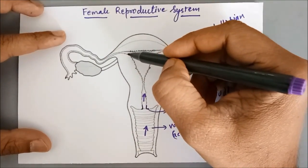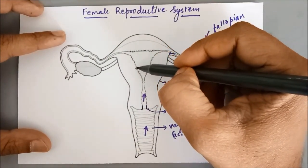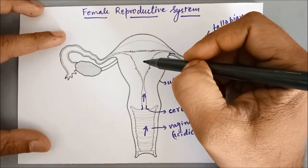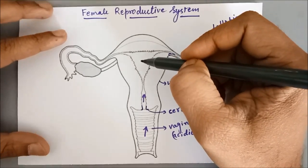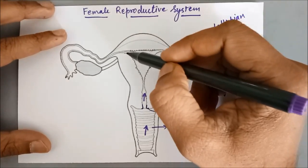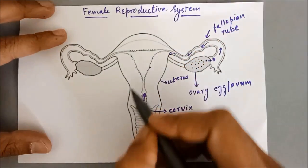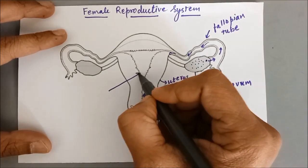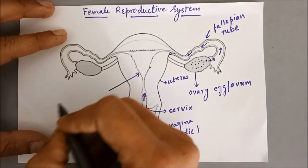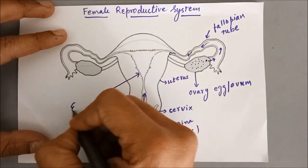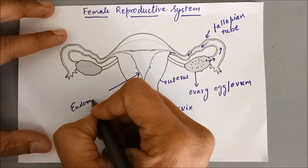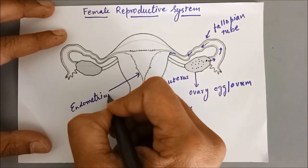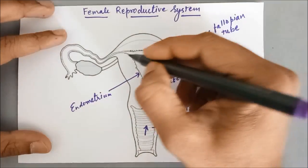This is the inner lining of the uterus, which is glandular and vascular in nature. This is called the endometrium.